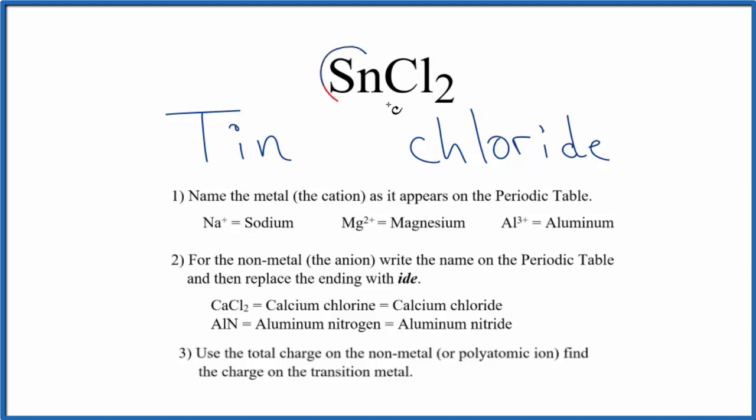But remember, tin, that's a transition metal. So since tin is a transition metal, it can have a different charge, depending what it's bonded to. Here, it's bonded to this chlorine, these two chlorine atoms. Chlorine, each one has an ionic charge of one minus when it forms chemical bonds here.